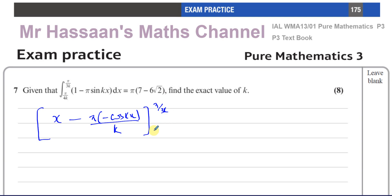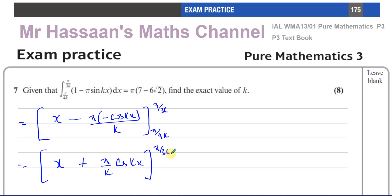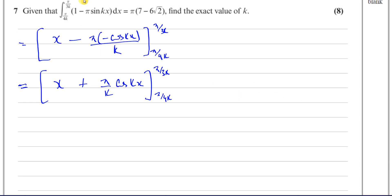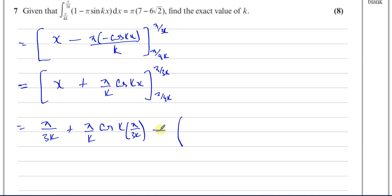The limits are pi over 3k and pi over 4k. Simplifying, we get plus pi over k times cosine kx. Now substituting the limits: putting in x = pi over 3k gives pi over 3k plus pi over k times cosine of k times pi over 3k, minus the result at x = pi over 4k, which is pi over 4k plus pi over k times cosine of k times pi over 4k.